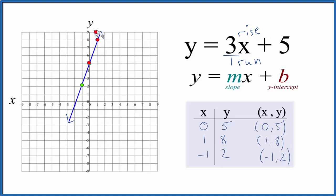We could go up 1, 2, 3 and over 1, but we've run out of graph paper. So let's go back to the y-intercept and go the opposite direction. Go down 1, 2, 3 and over 1 to the left. We could do that again. Down 1, 2, 3 over 1 to the left.